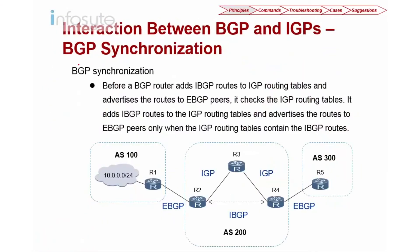Let's look into BGP synchronization rules. Looking at this topology, I have three AS: 100, 200, and 300. Assuming in AS100 I have a 10 network that I want to advertise to AS200 and AS300. R1 and R2 have an eBGP relationship, so R1 sends R2 information about the 10 network — that should not be any problem.